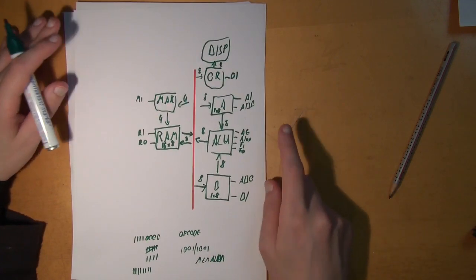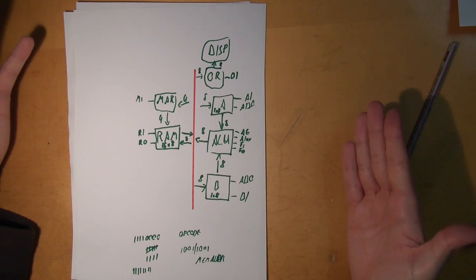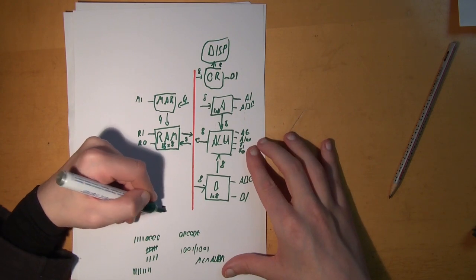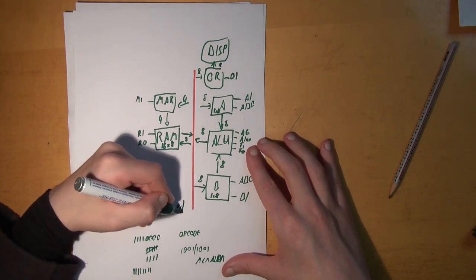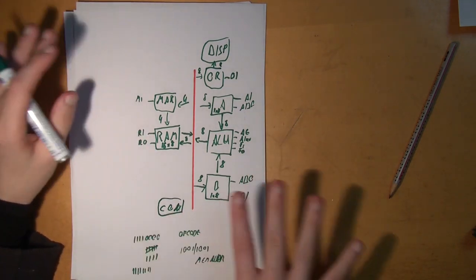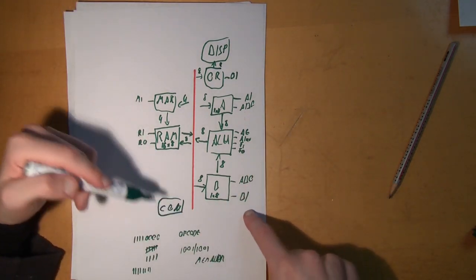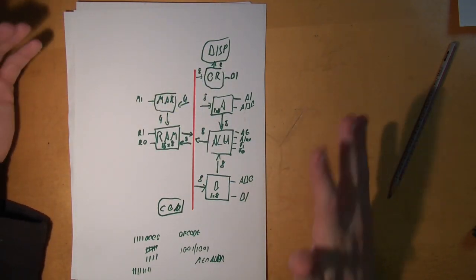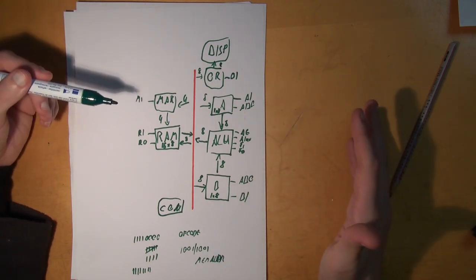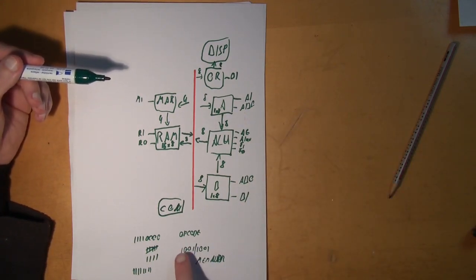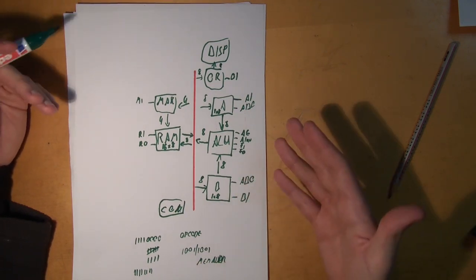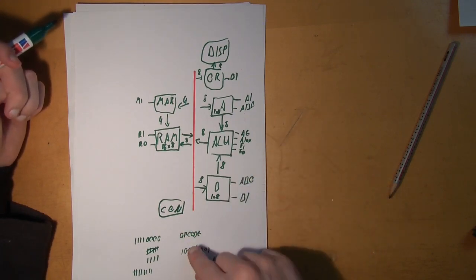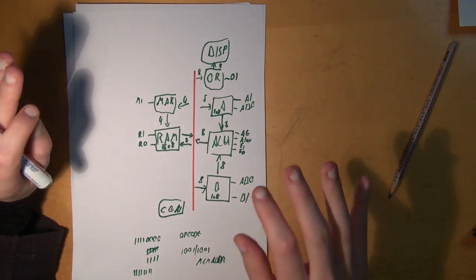Now the question arises: who controls all of these control bits? The answer is the control matrix. The control matrix sits somewhere, wired to all of these control bits, and it decides which control bits to activate at which time based on the opcode it receives. For every opcode, there are six steps that the control matrix performs.